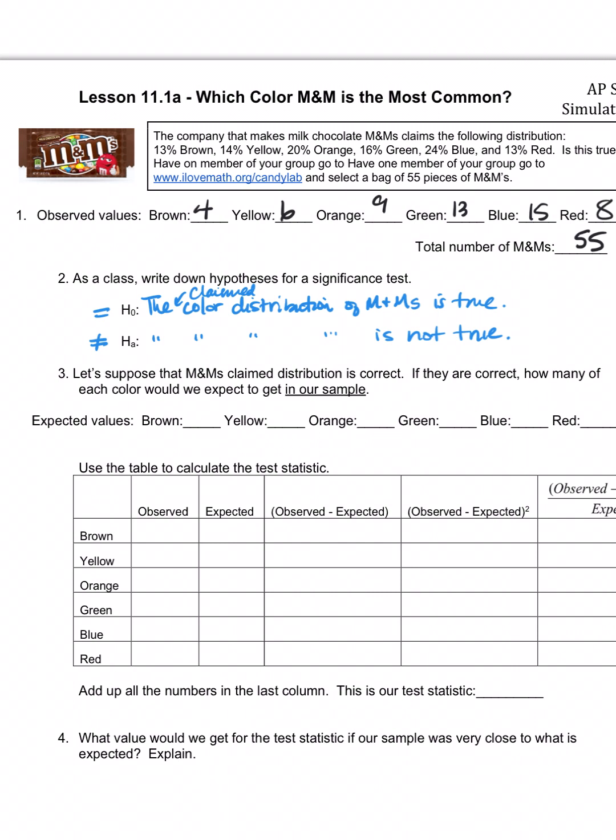Let's suppose that their claim is true, and if they are correct, how many would we have expected of each color to get? So they tell us the percentages, right? So brown, it's 55, and they said that it was going to be 13% brown. So if I take 55 and I multiply it by 0.13, for the sake of time, I'll give you these numbers. It comes out to 7.15.